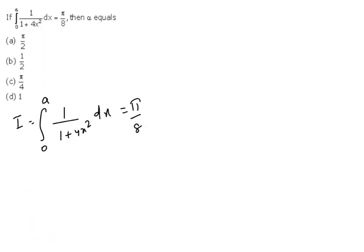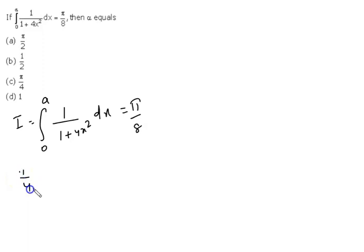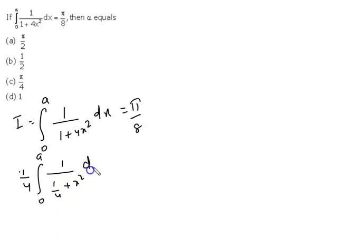Now I can take the common factor of 4 from the denominator. After taking 4 as common, we can write: 1/4 times the limit from 0 to a of 1/(1/4 + x²) dx, which equals π/8.